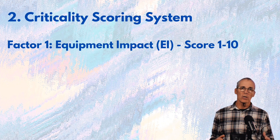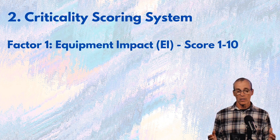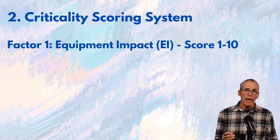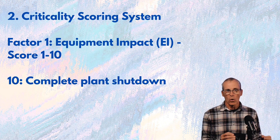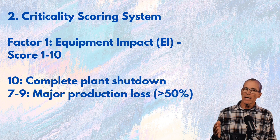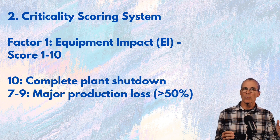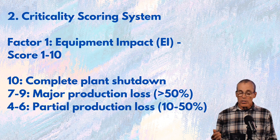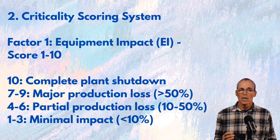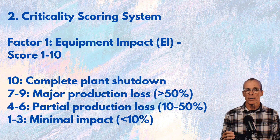We want to score how critical this equipment is. We're going to build a system — feel free to use or modify it. We'll have an Equipment Impact score, or EI, from one to ten. If that equipment could shut down the entire plant, it's a ten. A major production loss of more than 50% of output scores seven to nine. Partial production loss of 10 to 50% scores four to six. Minimal impact — less than 10% production loss — scores one to three.